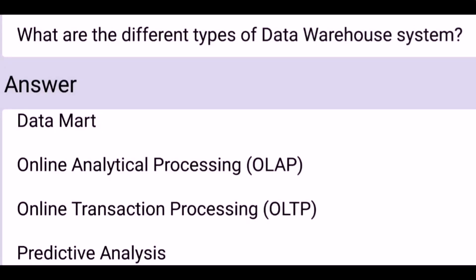What are the different types of data warehouse systems? They include Data Mart, Online Analytical Processing (OLAP), Online Transaction Processing (OLTP), and Predictive Analysis.